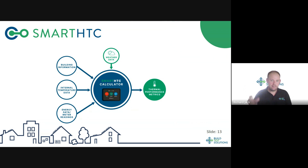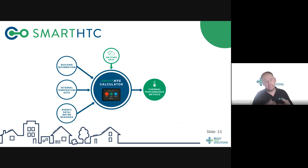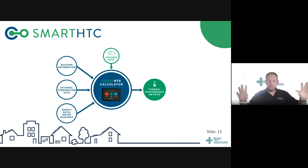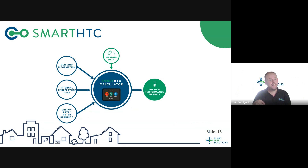Now for the nuts and bolts of using Smart HTC. The concept is: we gather information about the building from a survey, gather internal temperature data and energy consumption data, feed that into the Smart HTC calculator which lives in the cloud, and it fetches local weather data for your site. We process that mountain of data and turn it into thermal performance metrics — particularly measuring the amount of heat lost from the building.